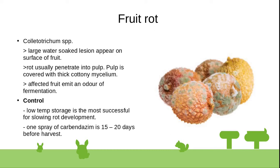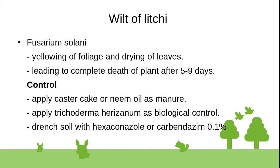Fruit rot is caused by Phytophthora species. The fungus penetrates through the fruit surface and then into the pulp. The pulp is covered with a thick cottony mycelium and the affected fruit emits an odor of fermentation. Control: low temperature storage is most successful for slowing rot development. One spray of carbendazim 15 to 20 days before harvest is recommended.